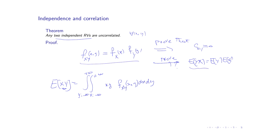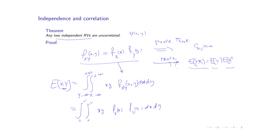So far I have used the definition of the expected value. I also need to use the independence property. Because the decomposition of the joint PDF holds, I substitute it in, and I get a double integral of x times y times f_x(x) times f_y(y) dx dy. Then I can reorganize, grouping x with f_x(x) and y with f_y(y).